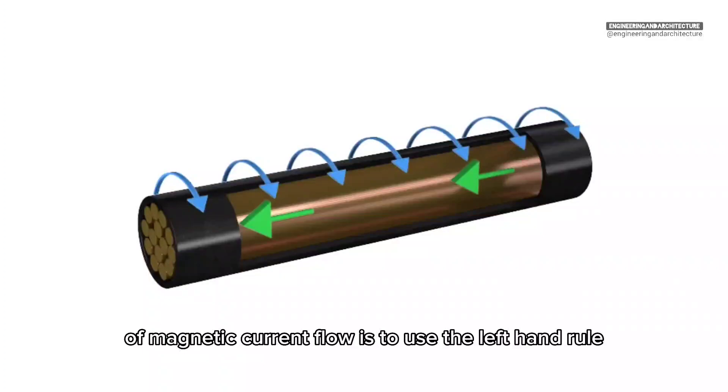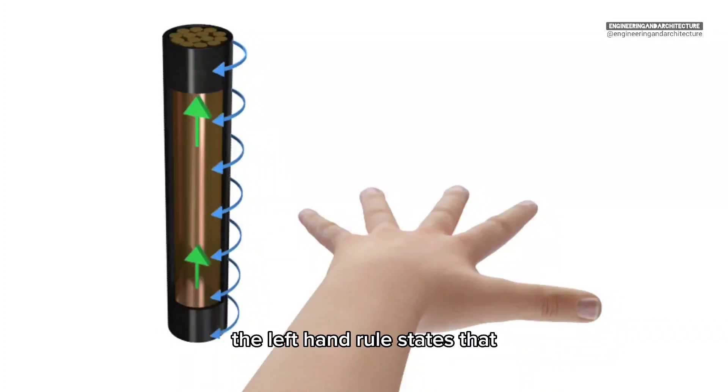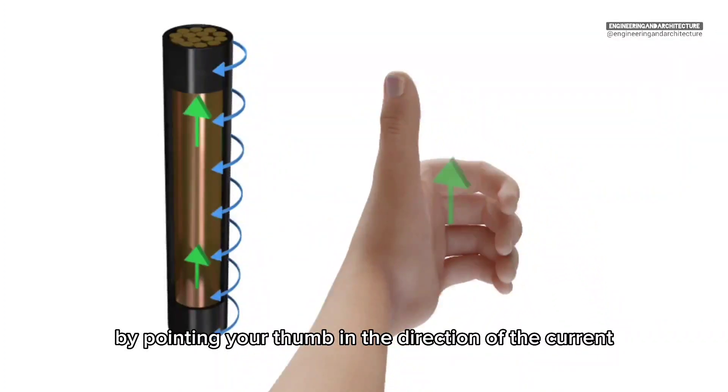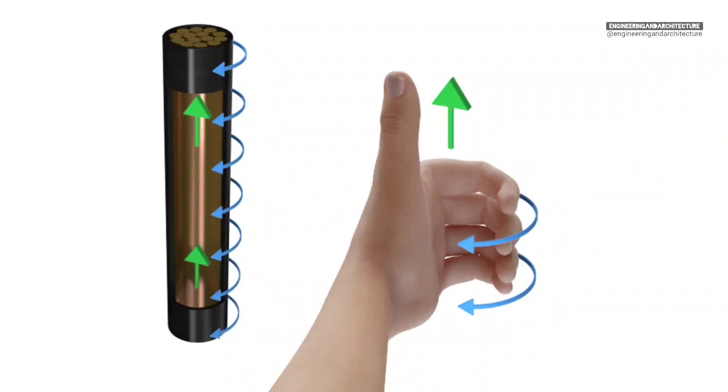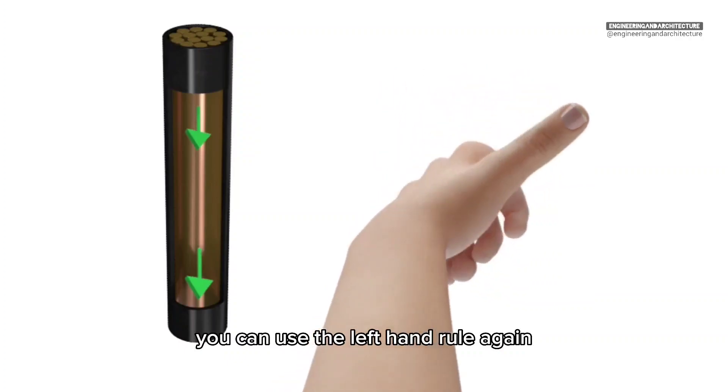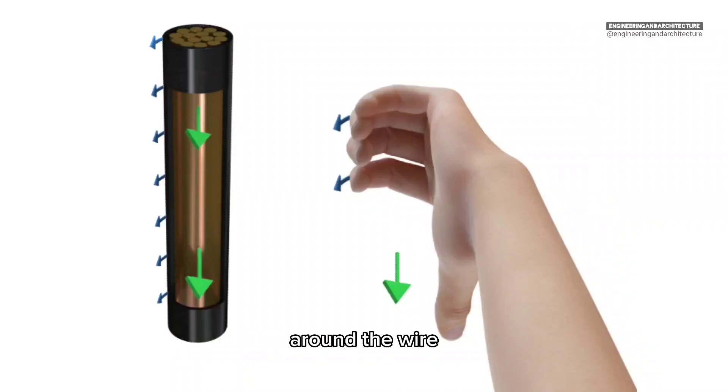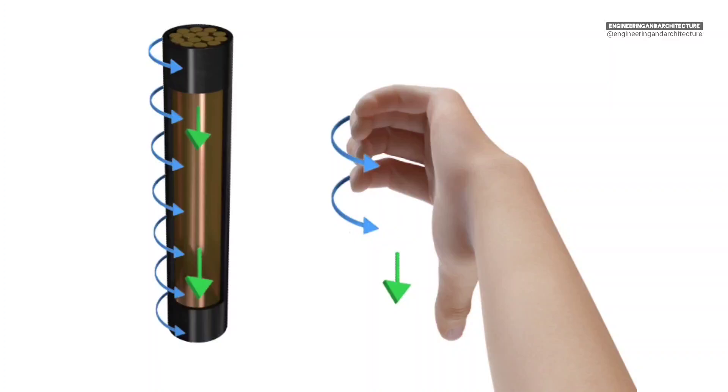A convenient method to determine the direction of magnetic current flow is to use the left hand rule. The left hand rule states that by pointing your thumb in the direction of the current, your fingers will naturally curl in the direction of the flux of the magnetic field. Reversing the direction of current, you can use the left hand rule again to show the direction of the concentric circular force around the wire. This method can be used to determine the direction of the magnetic flux as long as you know the direction of the current.